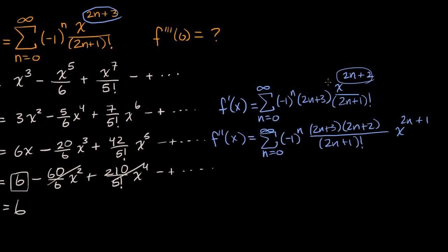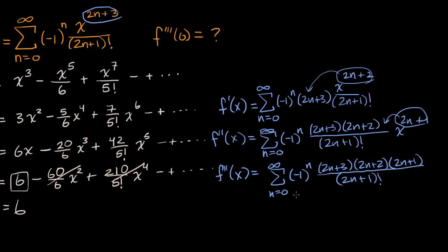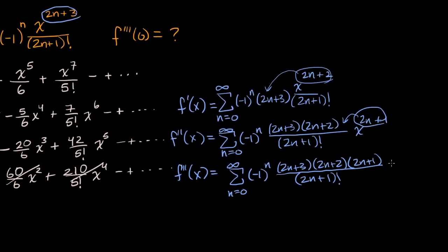For the third derivative, it's the sum from n equals zero to infinity of negative one to the n. Bringing the exponent out front again gives two n plus three times two n plus two times two n plus one, all over two n plus one factorial, times x to the two n. I'm just taking the exponent out front and decrementing it each time.